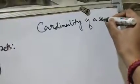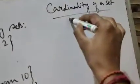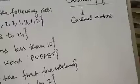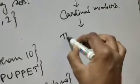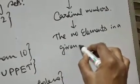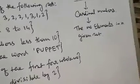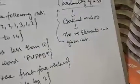What is the cardinality of a set? Before discussing cardinality, let us first discuss cardinal numbers. Cardinal numbers are the number of elements in a given set. The number of elements in a given set is the cardinal number of that set. We count the number of elements, and that will be the cardinal number. This property is known as cardinality of a set.